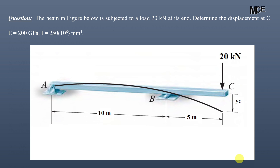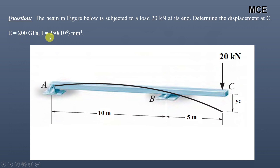Hello and welcome back to Master Civil Engineering. In this video you will learn how to find the deflection for a prismatic beam using the double integration method. The given question states that the beam is subjected to a load of 20 kN applied at C, and we have to determine the displacement at C. The modulus of elasticity is 200 GPa and the moment of inertia is 250 × 10⁶ mm⁴.